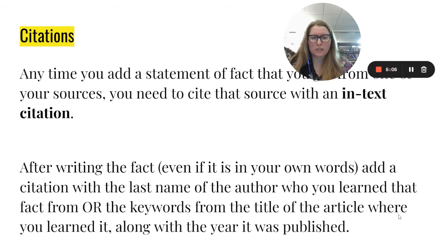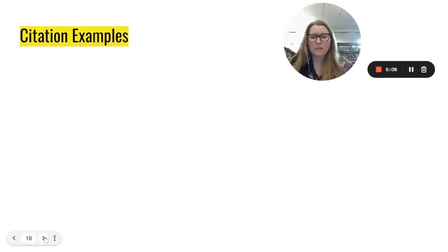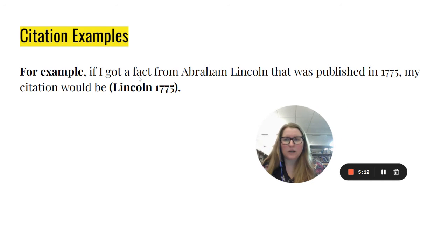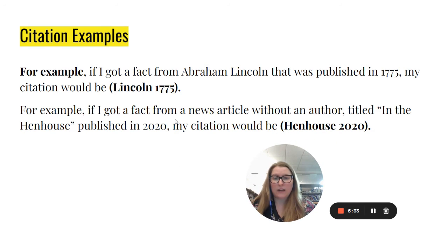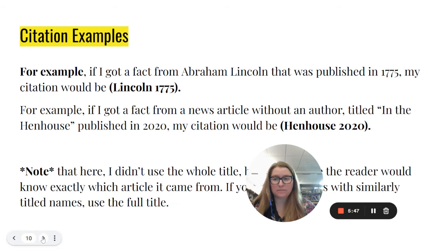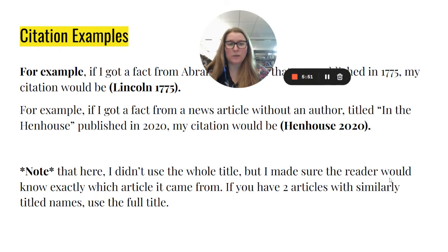Include the last name of the author who you learned that fact from. Or, since a lot of websites won't have authors available, use the keywords from the title of the article along with the year it was published. For example, if I got a fact from an article by Abraham Lincoln published in 1775, my citation would be: (Lincoln, 1775) — put it in parentheses with a period after the parentheses, not before. Another example: if I got a fact from a news article without an author, titled 'In the Hen House,' published in 2020, my citation would be: (Hen House, 2020). You just need the keyword and the year.